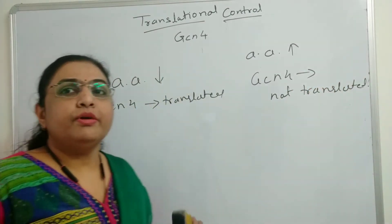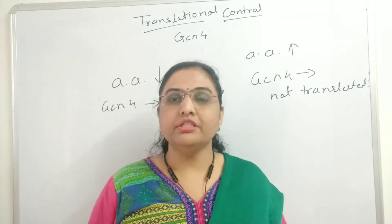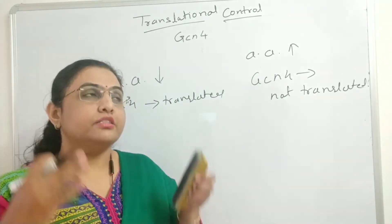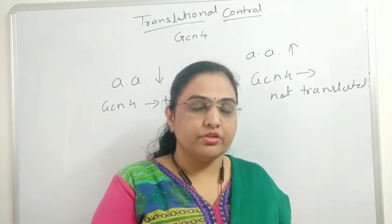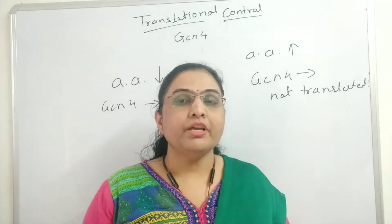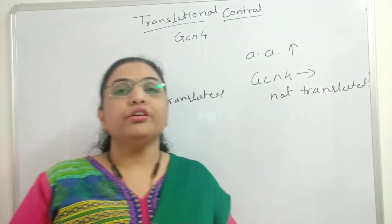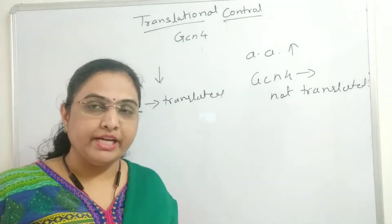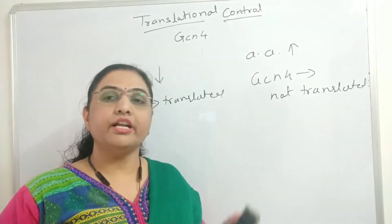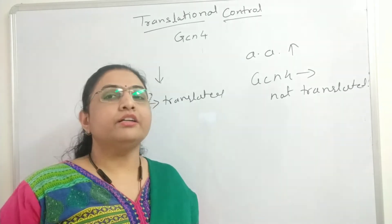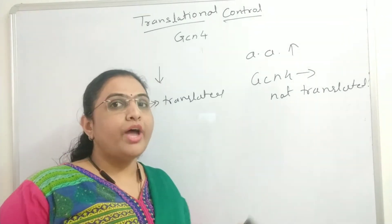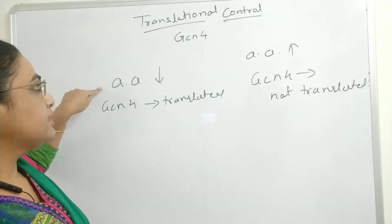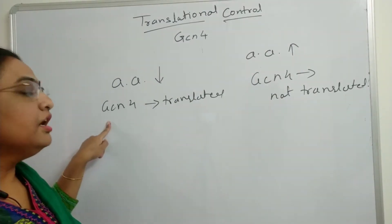Here you should remember that in the cell there will be synthesis of GCN4 mRNA — that is, transcription from the GCN4 gene will occur. Thus the mRNA of GCN4 will be present in the cell, but the decision of whether that mRNA goes for translation is made according to the environmental condition — specifically, the concentration of amino acids, that is starvation and non-starvation conditions.